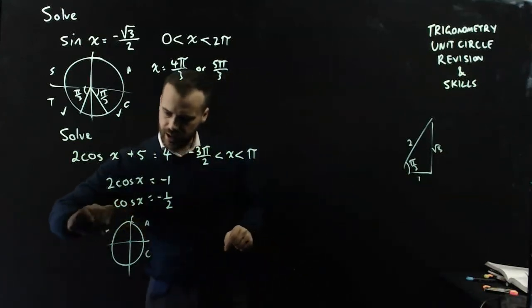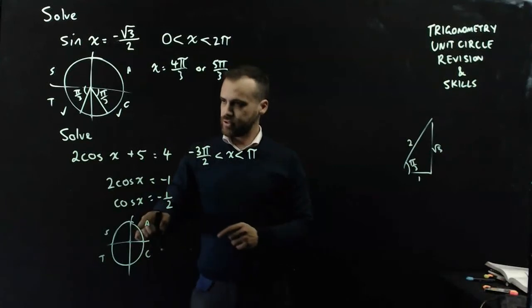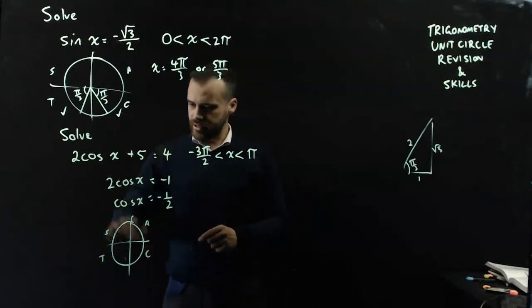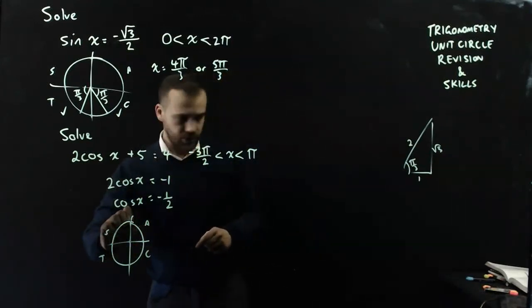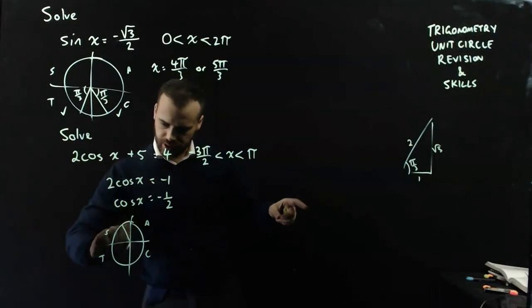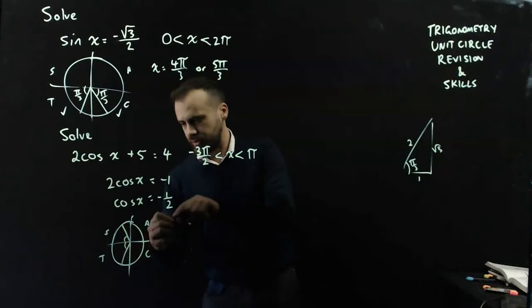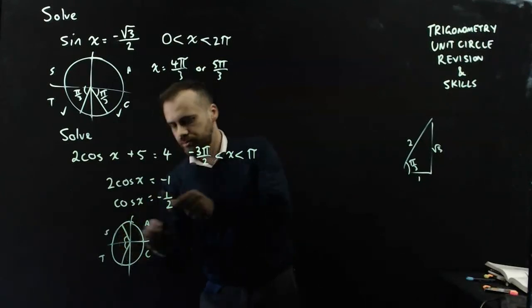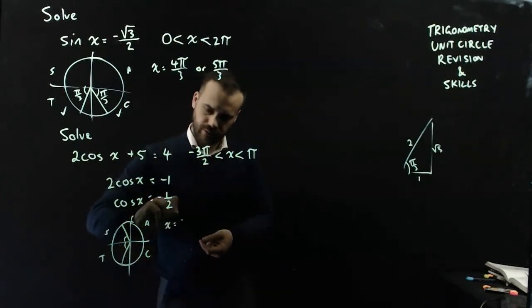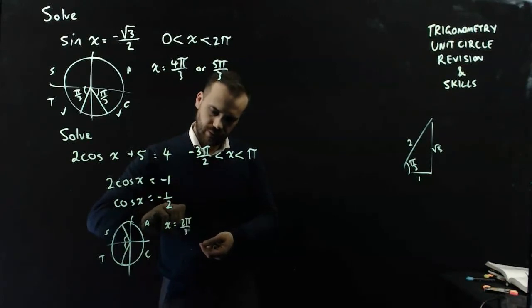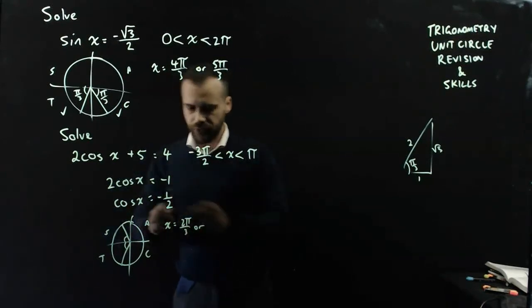C, A, S, T. It's negative, so it's going to be in the S and the T quadrants. So, π on 3 here and here, which makes my answer either π on 3, 2π on 3, or 4π on 3.